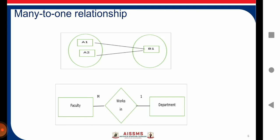In many-to-one cardinality mapping, an entity in A is connected to at most one entity in B, while an entity in B can be associated with any number — zero or more — of entities in A. An example is: many faculties work in one department.